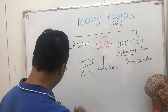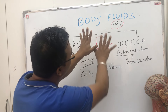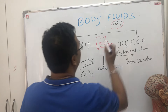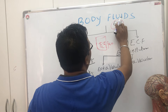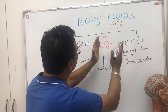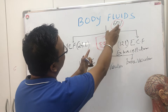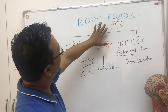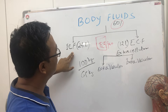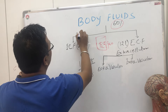Let's make a round figure: 60 percent of our human body is water. Two-thirds of this water is intracellular fluid — so intracellular fluid is two-thirds of total body water.